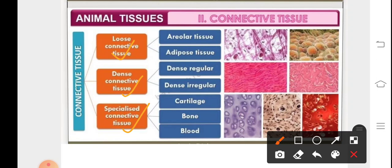The loose connective tissue comprises areolar tissue and adipose tissue. The dense connective tissue comprises dense regular and dense irregular tissue. The specialized connective tissue comprises cartilage, bones, and blood.